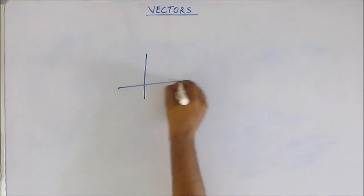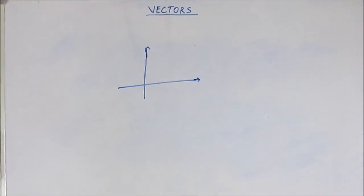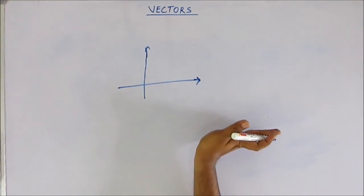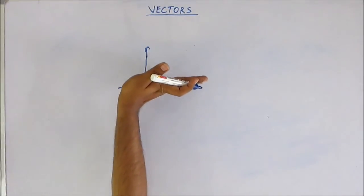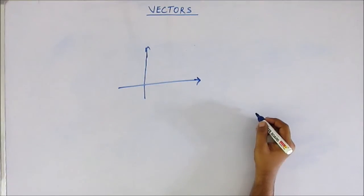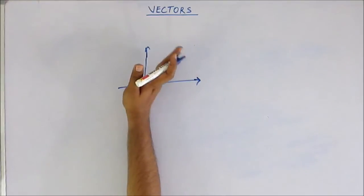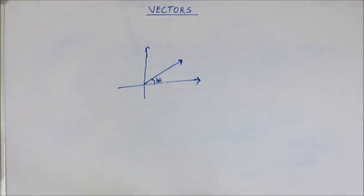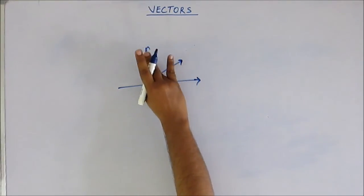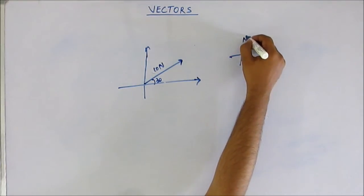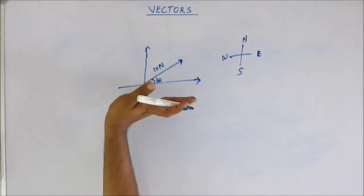Suppose we have an x-axis and y-axis on a graph. If I ask you to plot a force of 10 Newton 30 degrees north of east — when you get language like 'north of east', you start from east and go towards north. So 30 degrees north of east means you start from east and rotate 30 degrees towards north. You give any arbitrary length to represent 10 Newton in that direction. So this is a 10 Newton force at 30 degrees north of east.